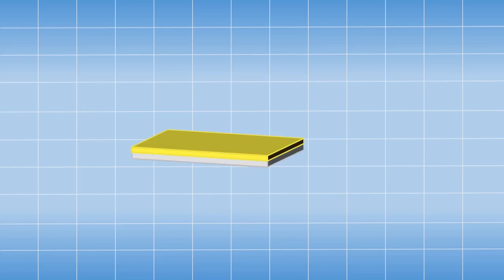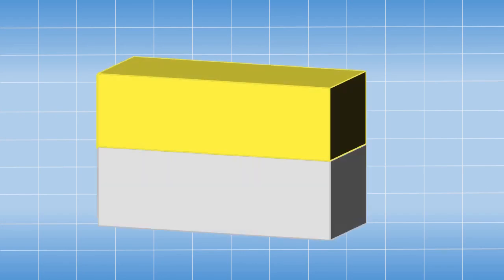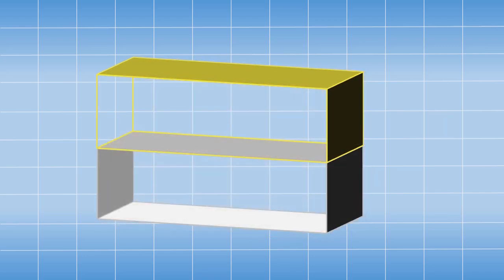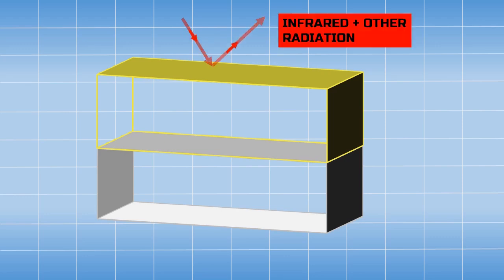This is a multi-layered material having polycarbonate plastic with a thin film of gold on the top. When radiation from space falls on the gold layer, it only allows some amount of radiation in the visible range to pass and reflects all the other infrared and harmful radiations.